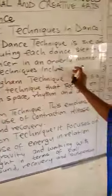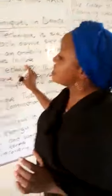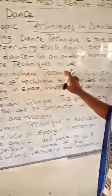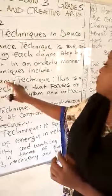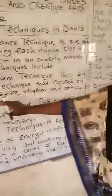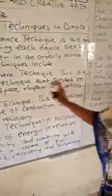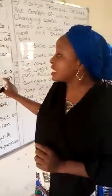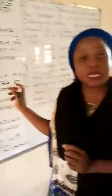Now, the types of dance techniques. We have four types of dance techniques. One, we have the Kornikha technique. It's called Kornikha because it was introduced by Kornikha. This is a technique of dance that focuses on the body in space, rhythm, and articulation.